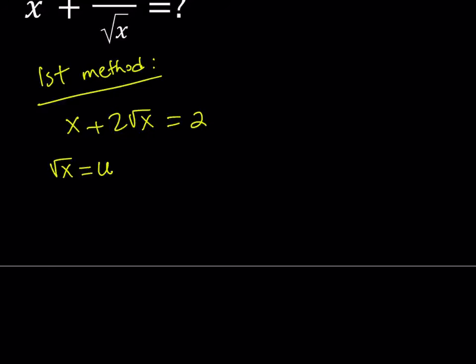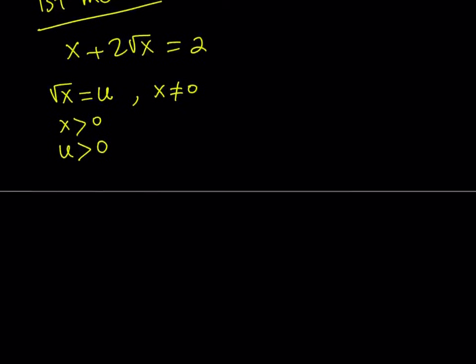Square root of x equals u. This means that since x does not equal 0, because if x is equal to 0, the equation is not satisfied. So we know that x does not equal 0. Having said that, we can safely say that x is positive and u is positive. Great. So let's go ahead and make the substitution.